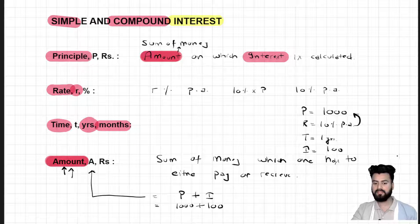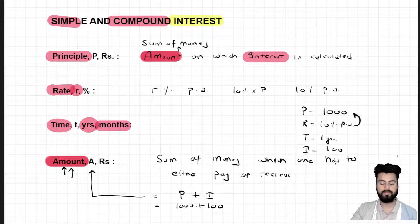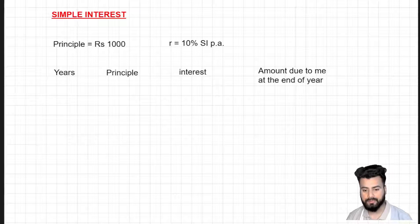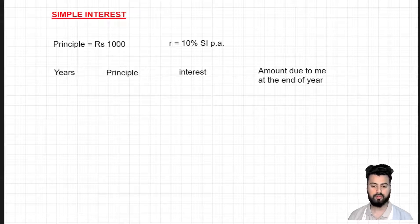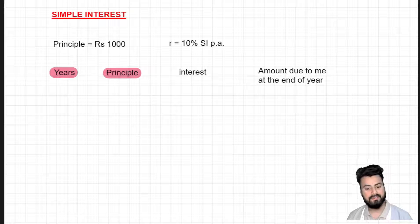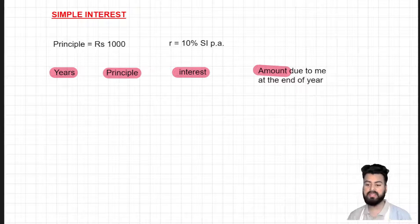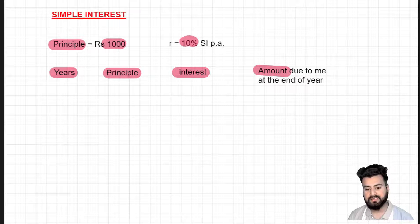After understanding these factors, it is now time to start off with simple interest. We will come to compound interest as well, but first we will talk about simple interest only. Using this data, I am going to show you the calculation of simple interest year by year. The first column is for the years, the second for the principal on which interest is applicable, the third for the interest received at the end of each year, and the fourth for the amount at the end of that year. Let's assume principal is 1000 rupees and rate is 10% per annum at simple interest.